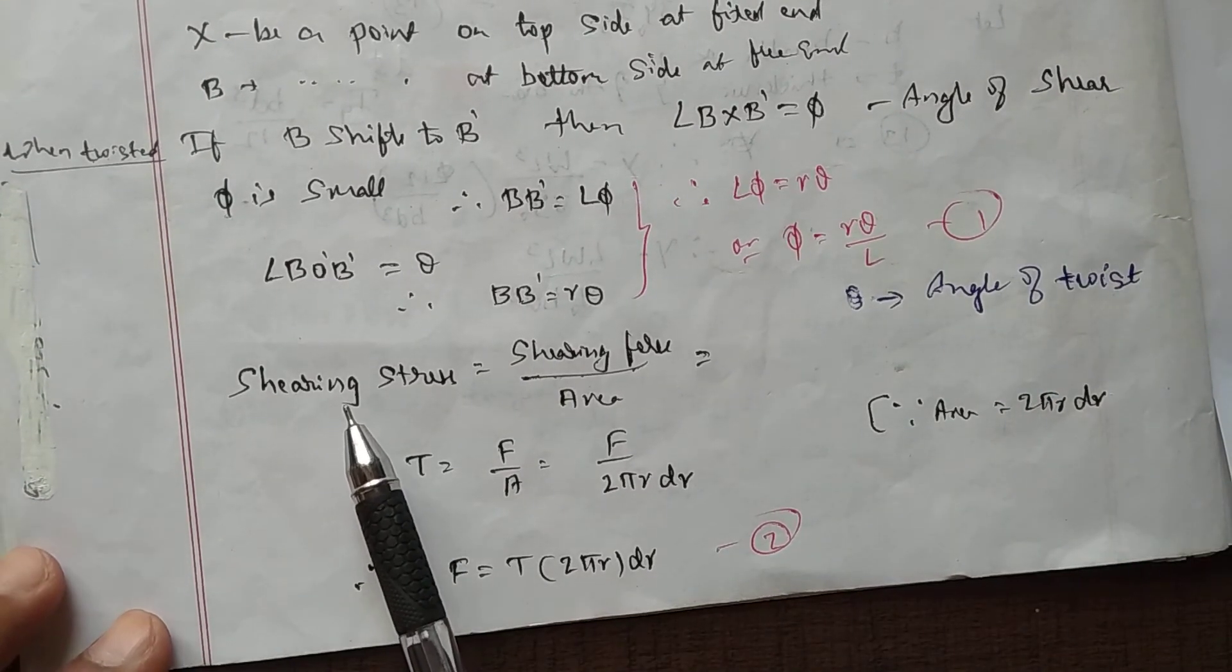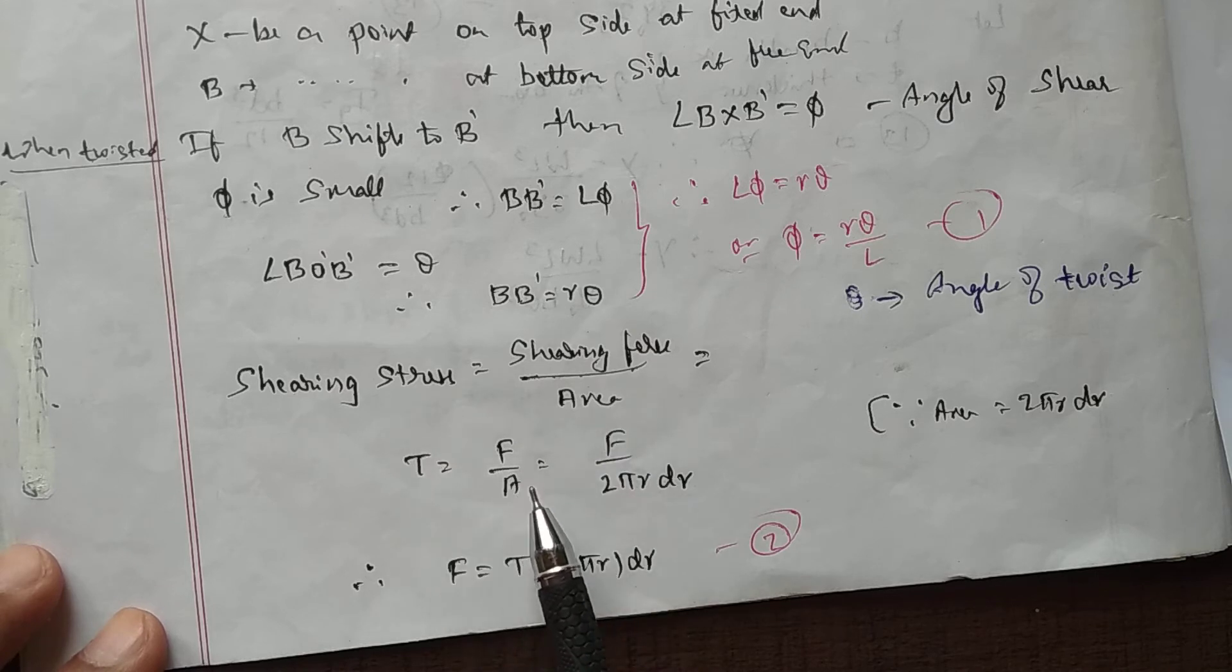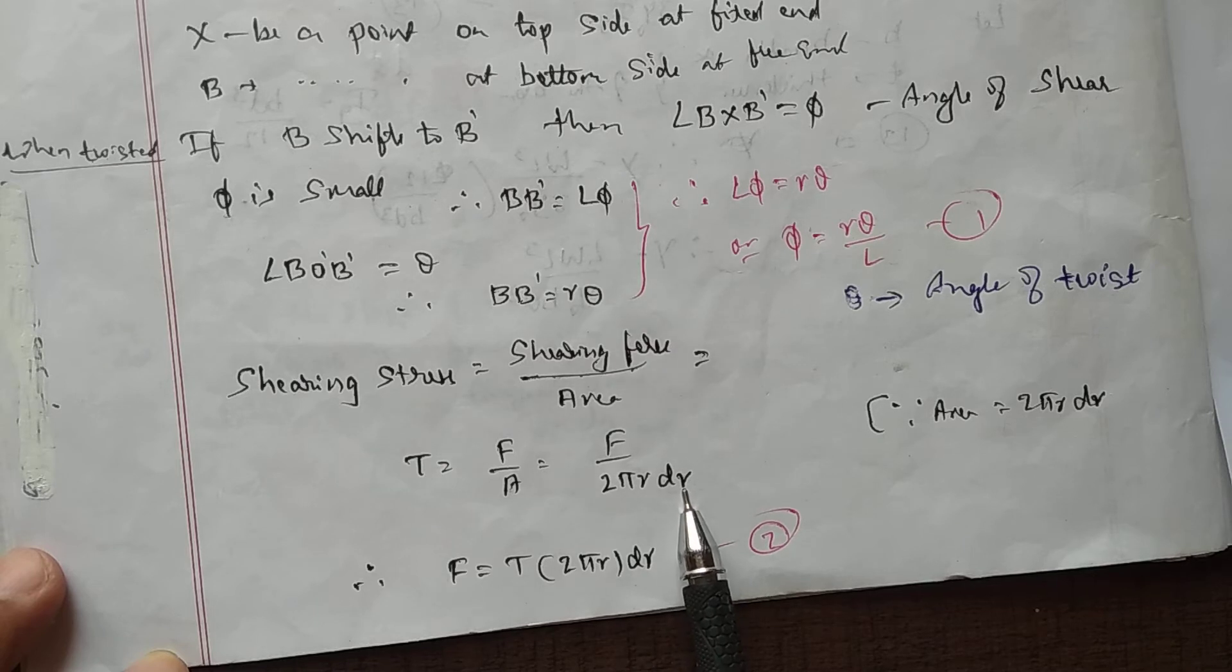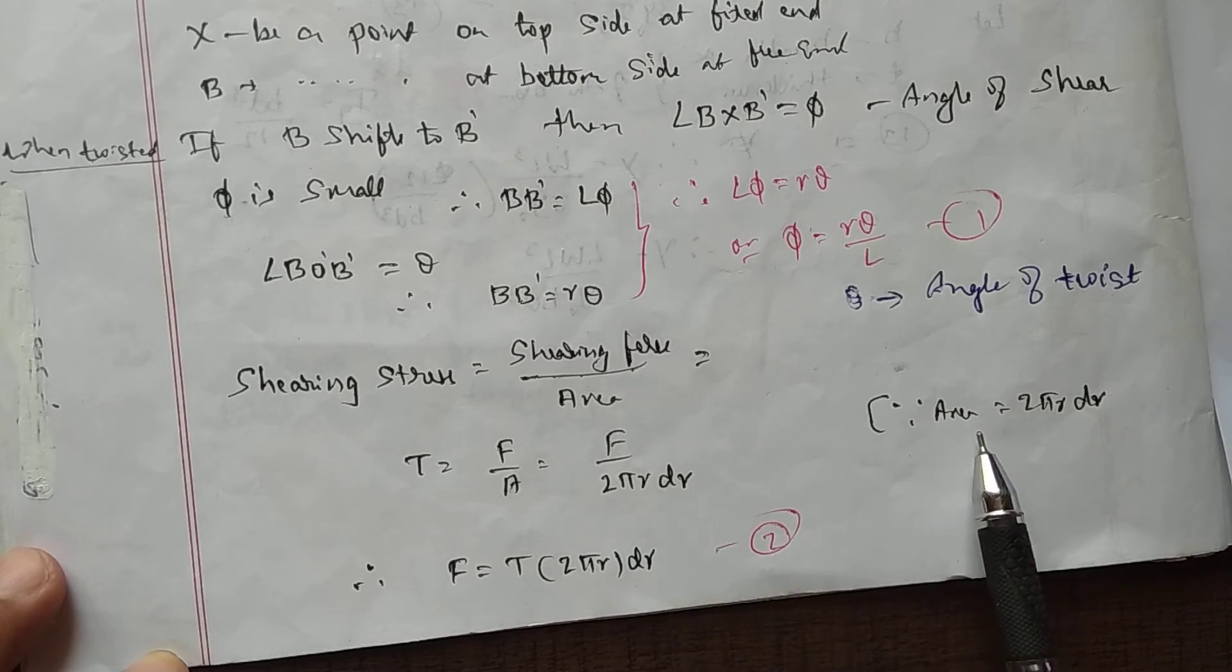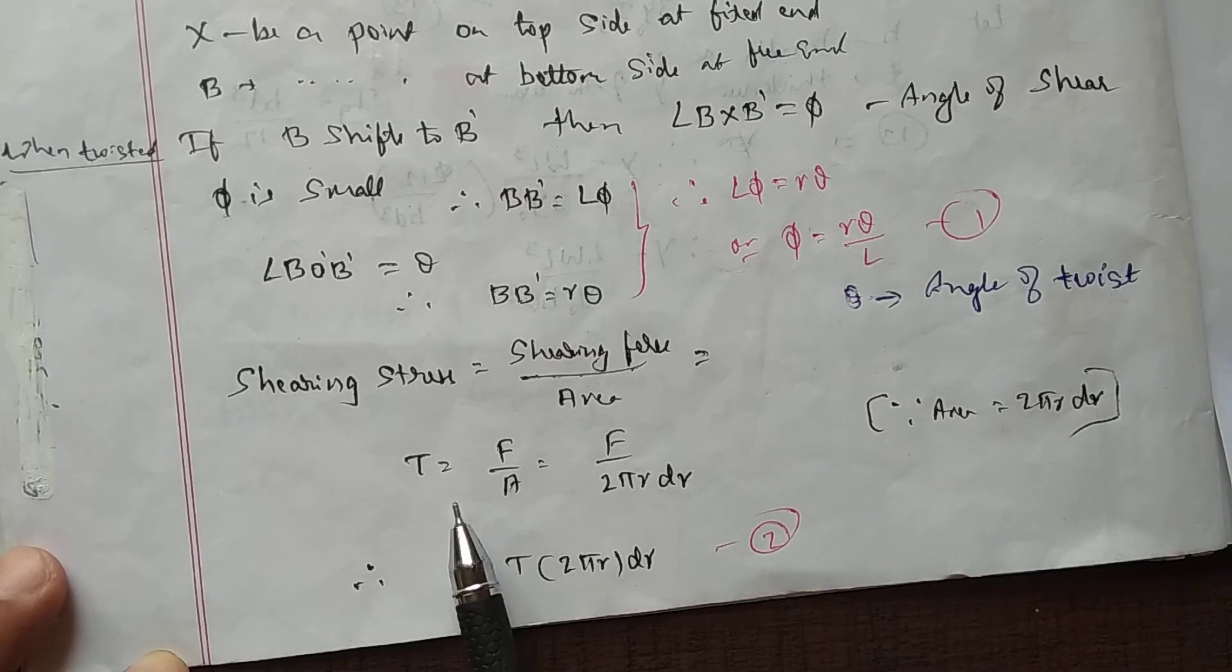Now, according to definition of the shearing stress, it is given by shearing force by the area, that is force per unit area. That is T equals F by A, that is F divided by area of the concentric layer, which is 2 pi r dr. Therefore, F equals T into the area, that is 2 pi r dr.